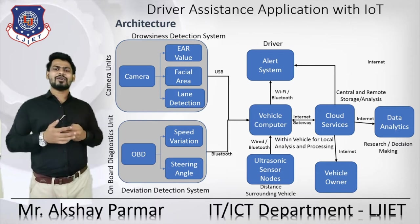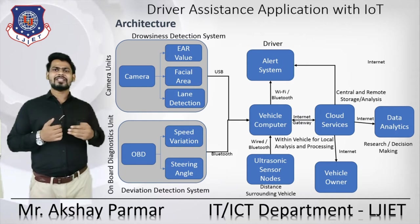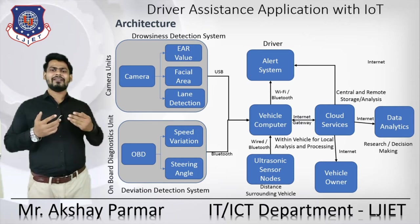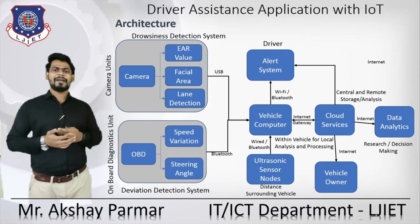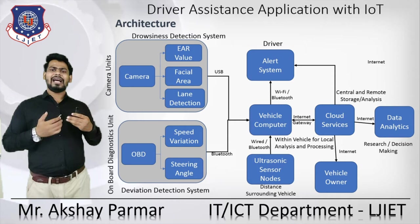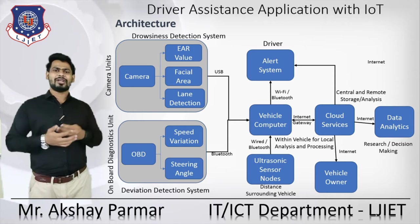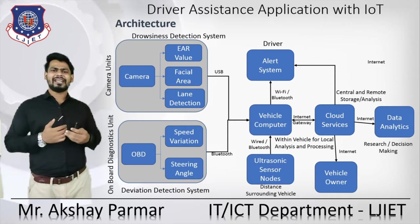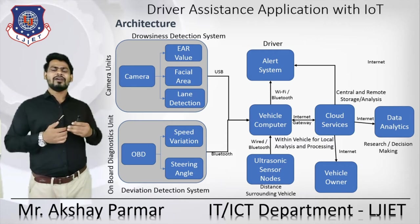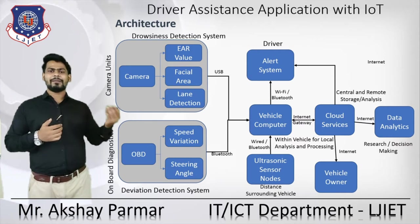There is also an ultrasonic sensor node, which finds the distance between two objects. If a vehicle is near another object, the ultrasonic sensor helps monitor the safe distance. This sensor can be connected via wired or wireless communication. After processing all the data, we can store it on the cloud and receive commands from cloud services.